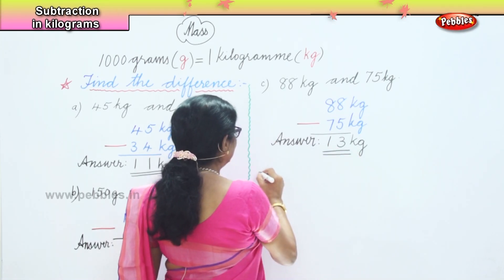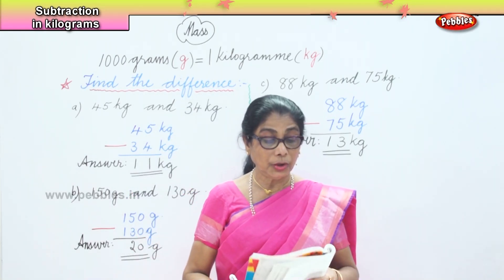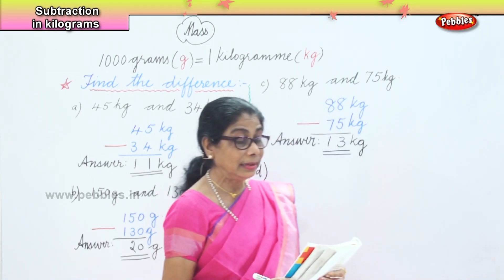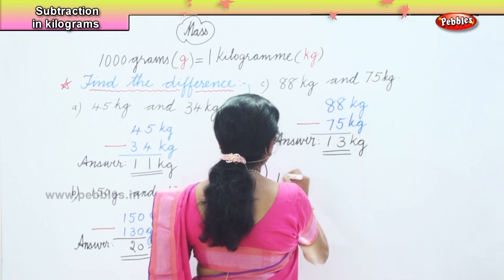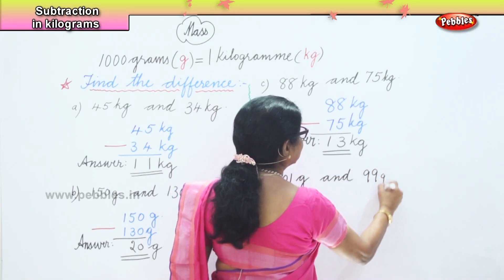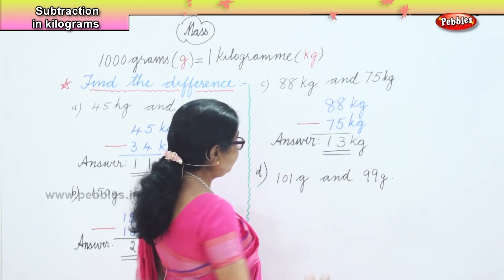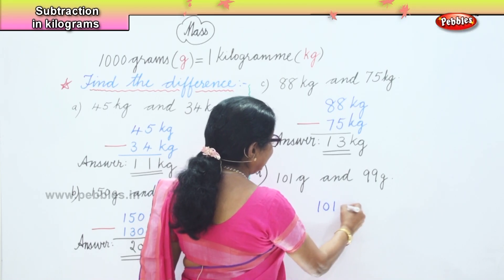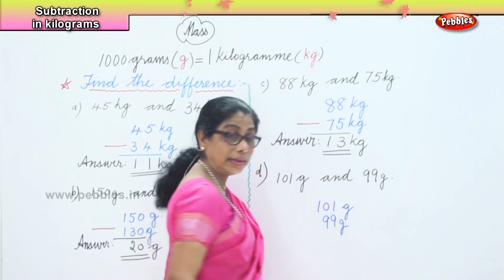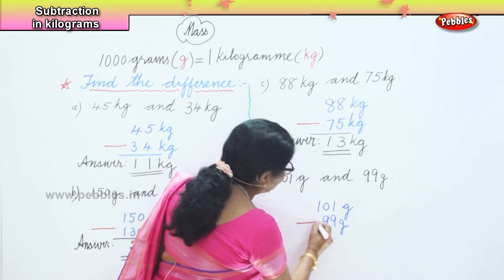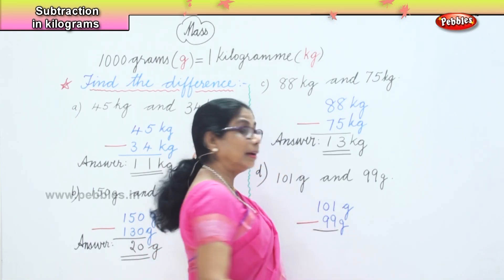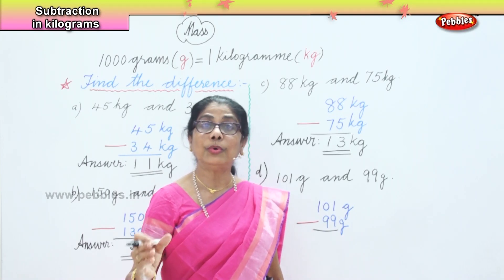Finally we work out one more sum. We have 101 grams and 99 grams. We write 101 grams take away 99 grams. We are finding the difference, so put the minus sign and draw a line before we do the sum.